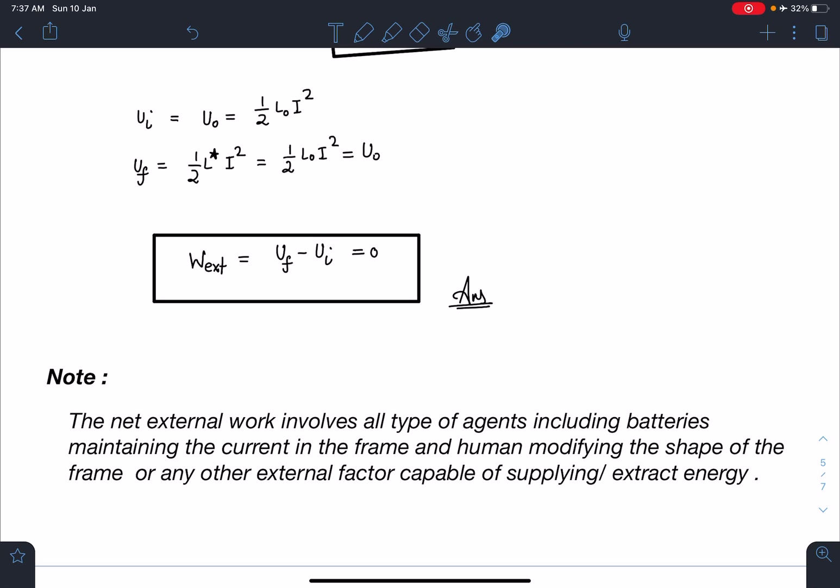The net external work involves all type of agents including batteries which is maintaining the current in the frame. Because as you will start bending, its inductance is going to change. If inductance is changing, that will have a different current. If battery is connected across this, the current will be actually changing. But battery has to do some work or some work we will be pulling out of the battery in order to maintain the current. Maybe there is another human also who is modifying the shape of the frame. Or any other external factor which is capable of supplying or extracting energy. All those work done are involved in this.